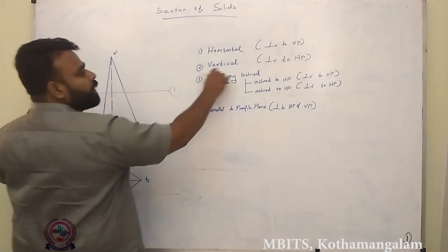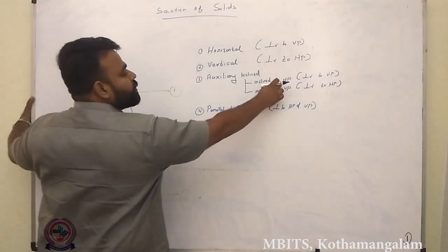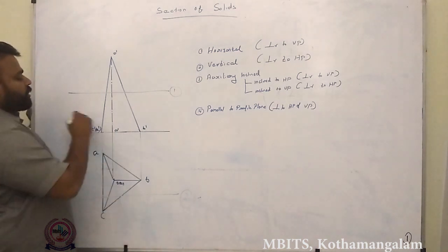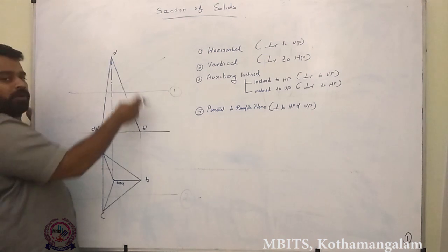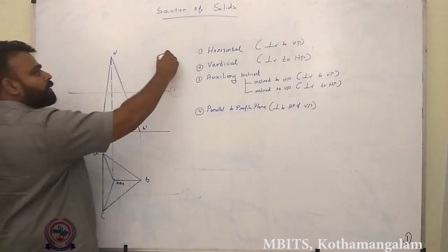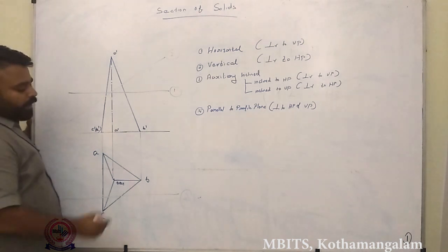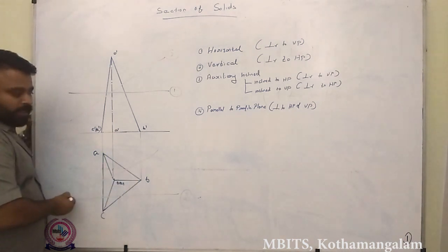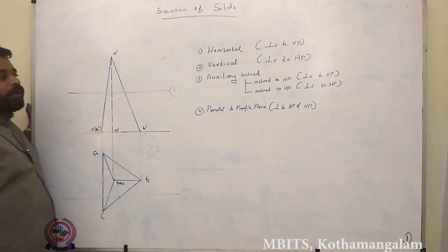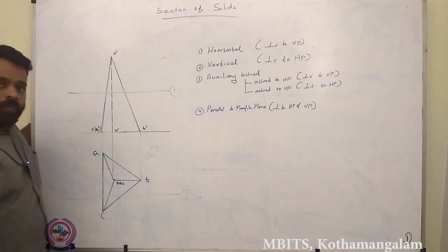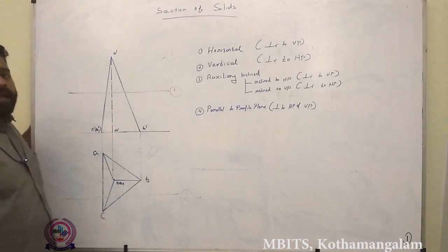Now the two auxiliary inclined planes: the first is a section plane inclined to HP. You can see this section plane is represented as a straight line which is inclined to HP and it is cutting the solid — this is condition number three. The second sub-condition is a section plane inclined to VP. The last condition is a section plane that is parallel to the profile plane, or which is perpendicular to both HP and VP. That section plane can actually be represented in the side view only, which we will discuss as a different case.